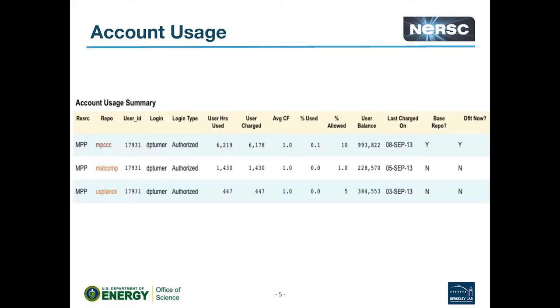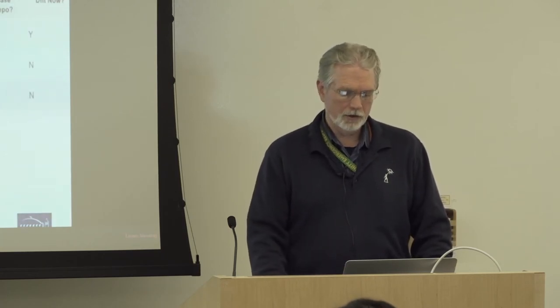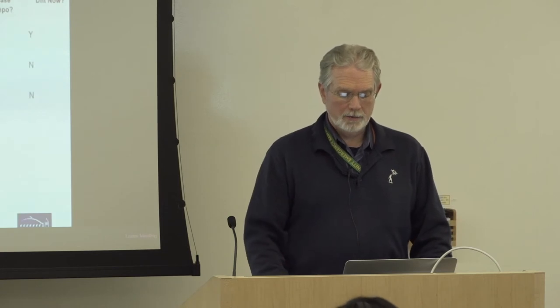Here's an example of a person belonging to multiple repositories. The information shown includes your hours used and hours charged. Different machines and different queues have different charge factors, and QoS — quality of service — can also have different charge factors. We apply those charge factors, so your actually-charged hours may in some cases be lower than the actual hours you used. Then there's the balance of time you have left.